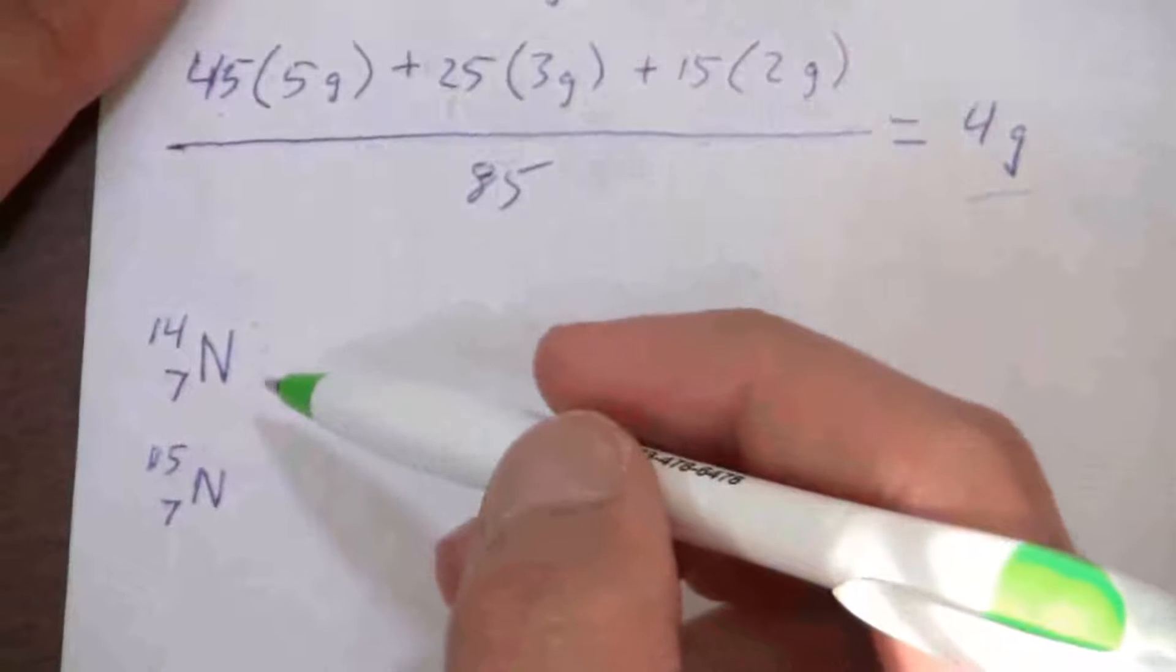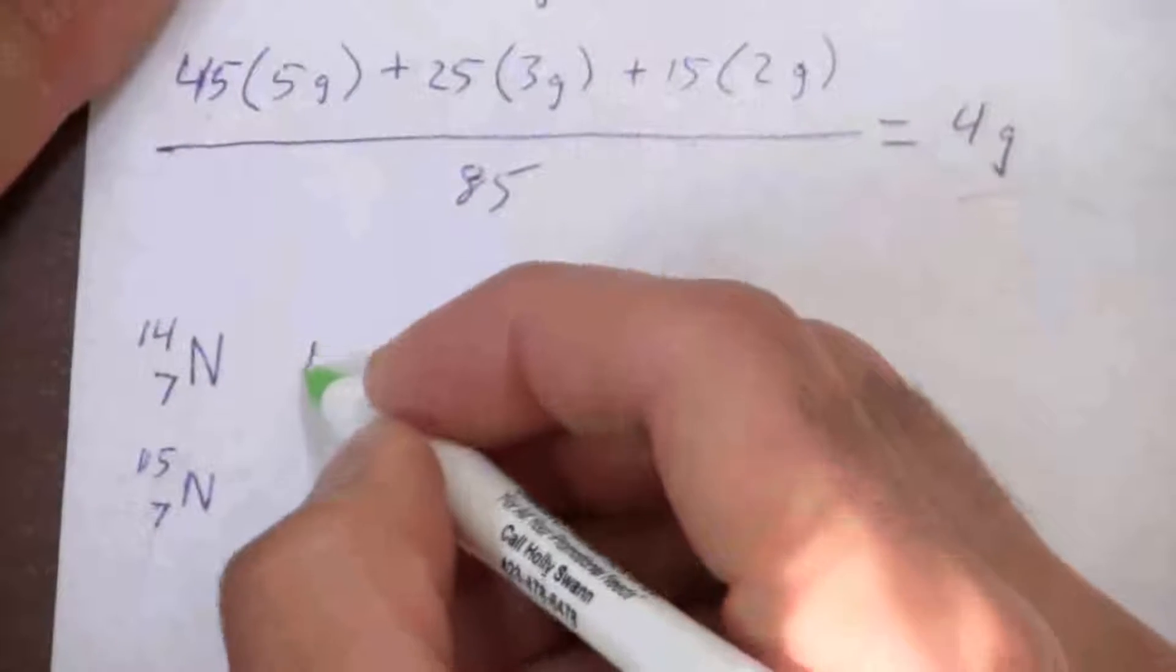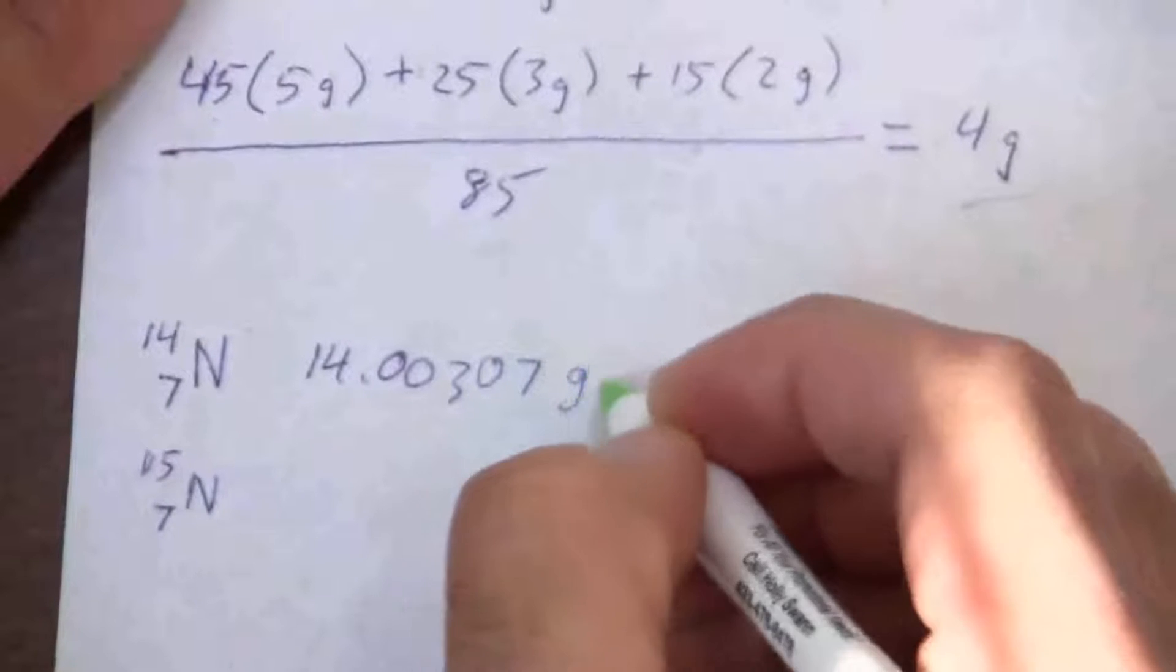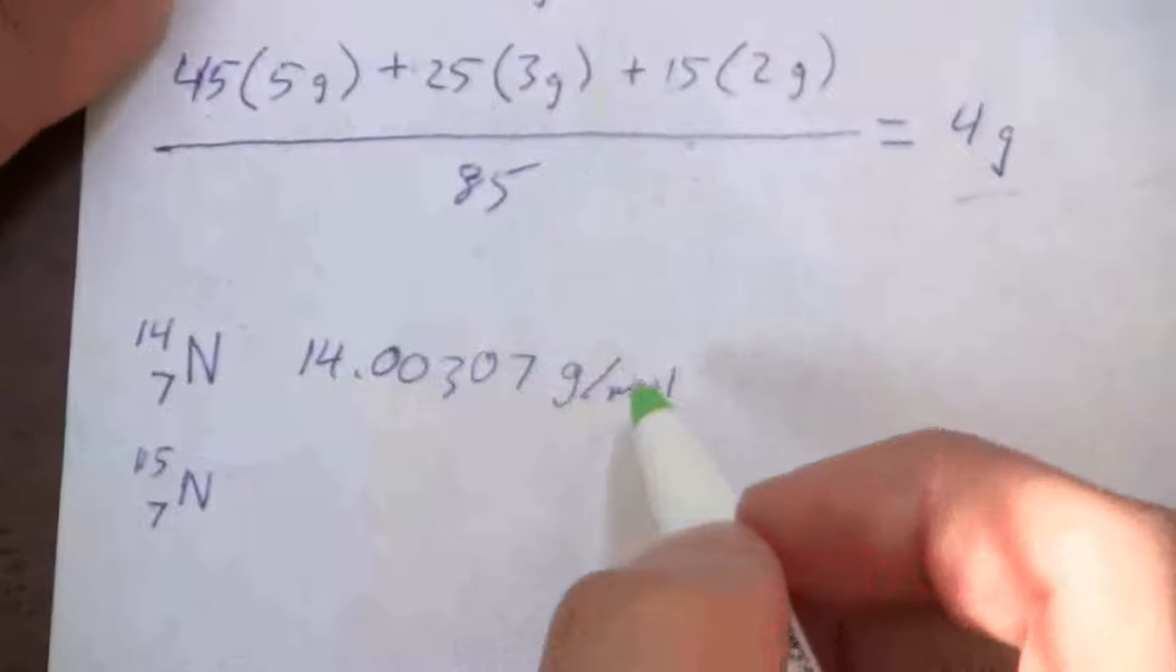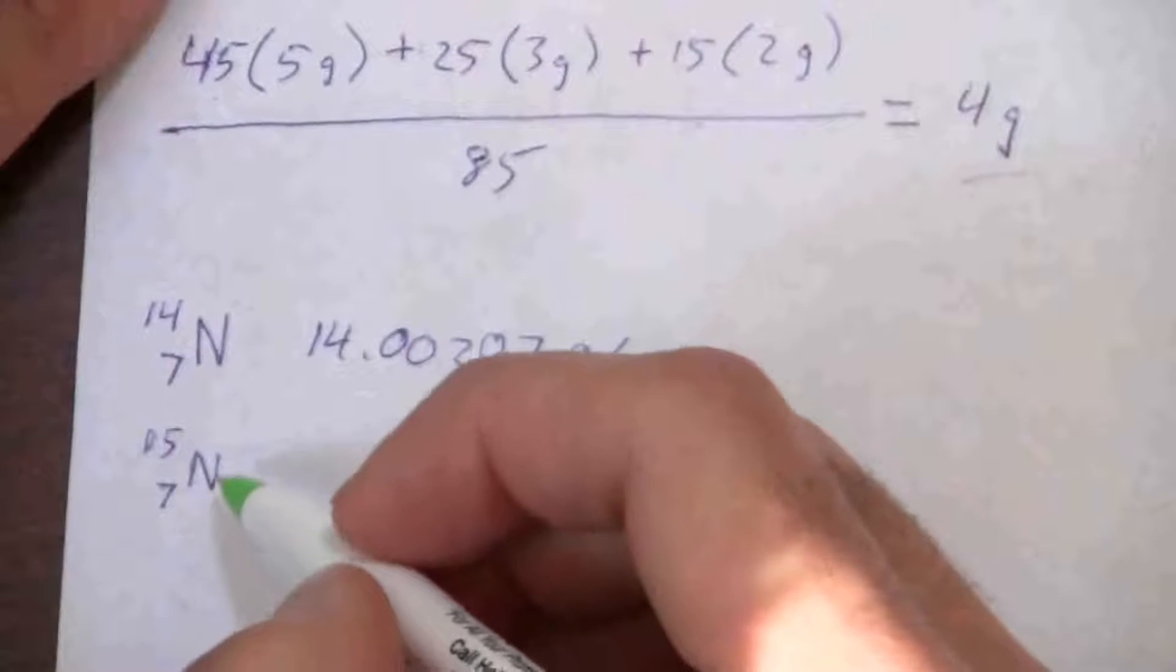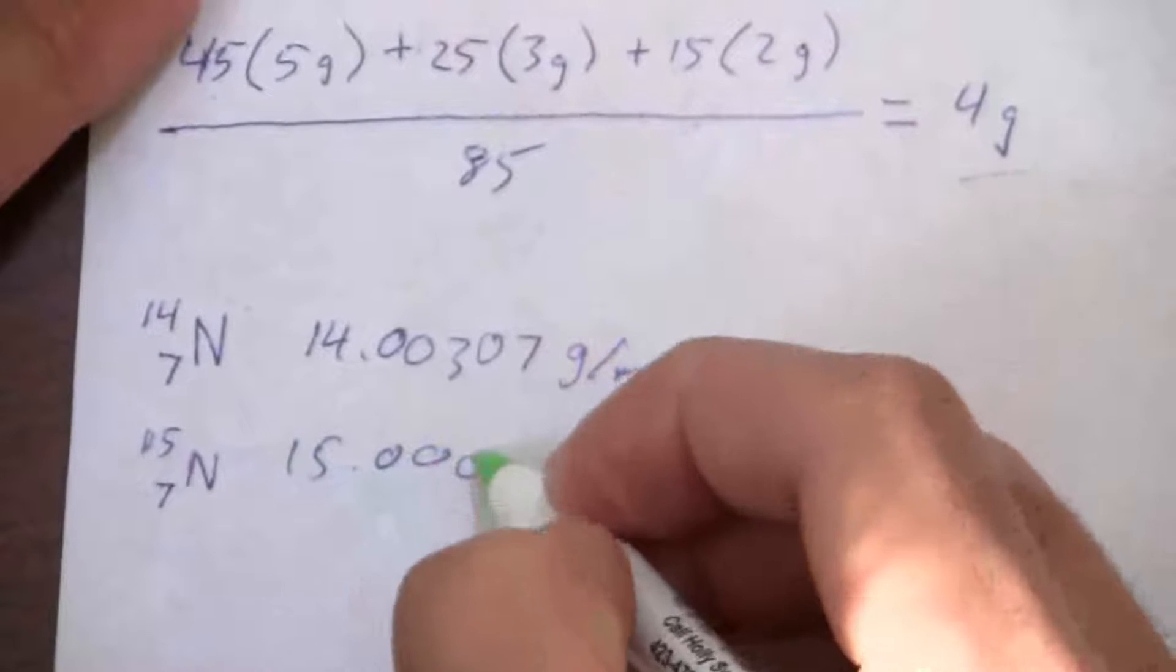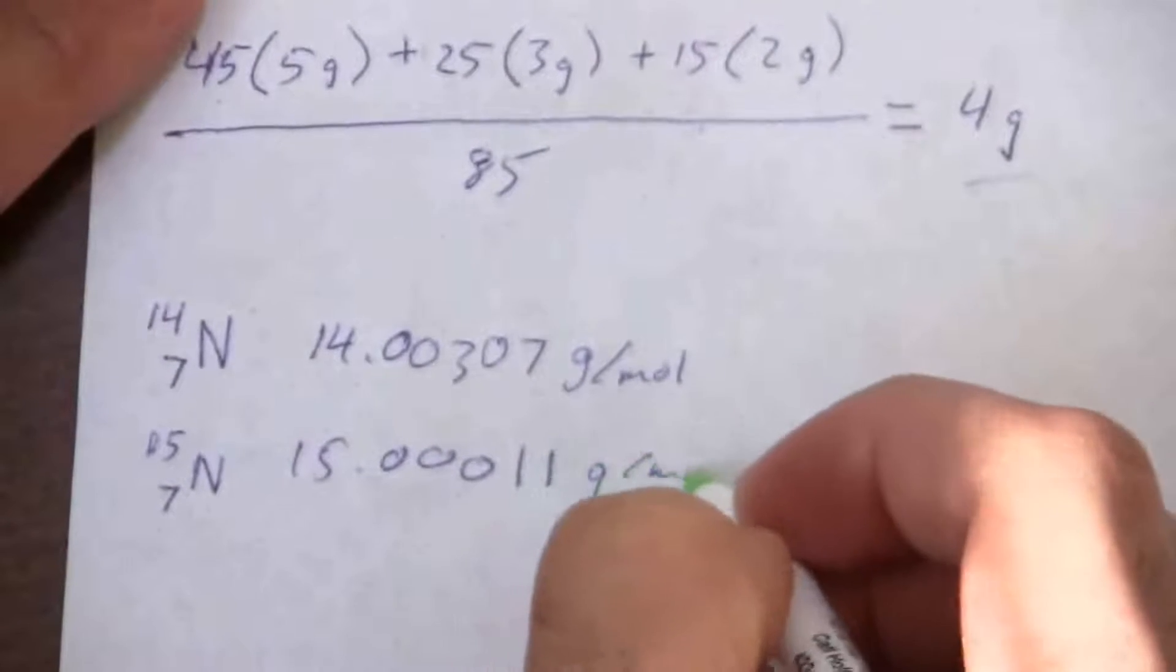So nitrogen-14 has a mass of 14.00307 grams per mole. That's its molar mass. The other isotope, 15, has a mass of 15.00011 grams per mole.